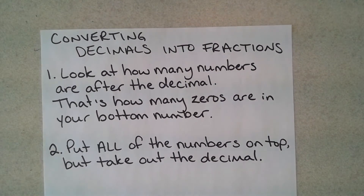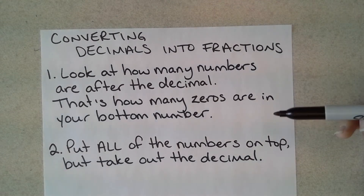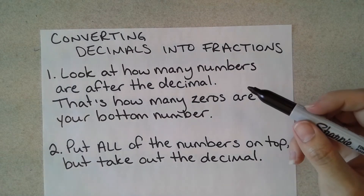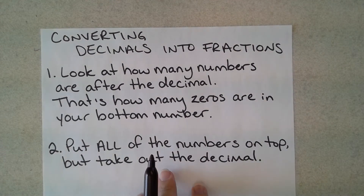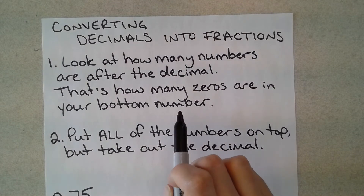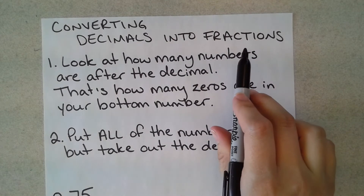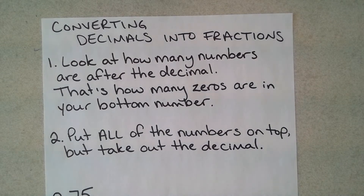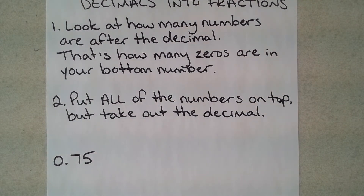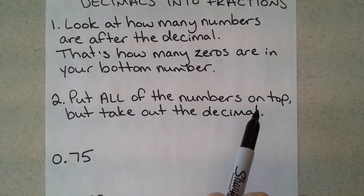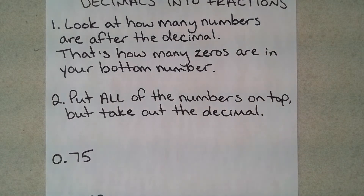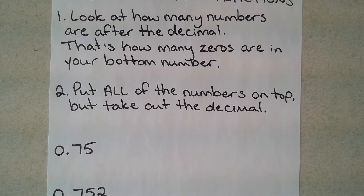Now I'm going to show you how to convert decimals into fractions. I wrote a couple of instructions here to help you remember. Step one: look at how many numbers are after the decimal — on the right side — because that's how many zeros are going to be in your bottom number of the fraction. Step two: put all of the numbers that are in your decimal on top, but take out the decimal point.